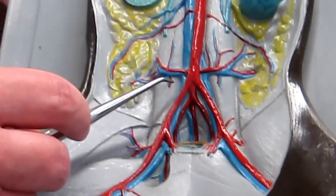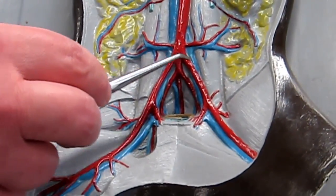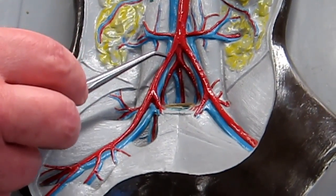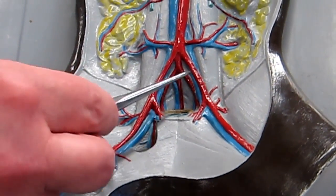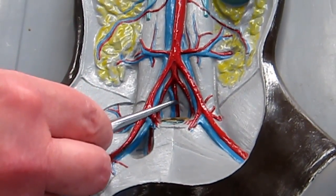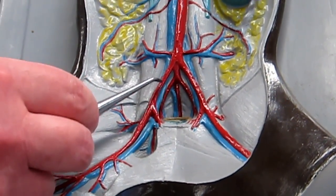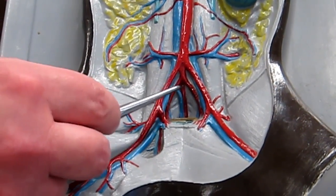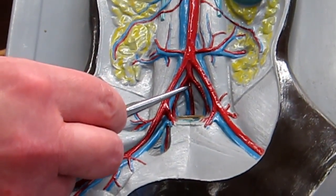So the differences that we have: first, there's no common iliac in the cat. And second, the internal iliacs branch off of the sacral artery instead of branching away from the external iliacs and the common iliac.